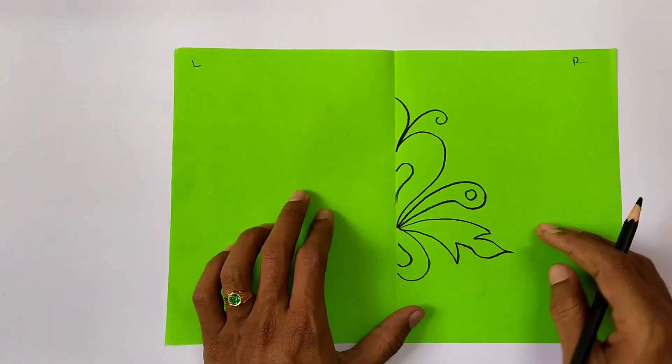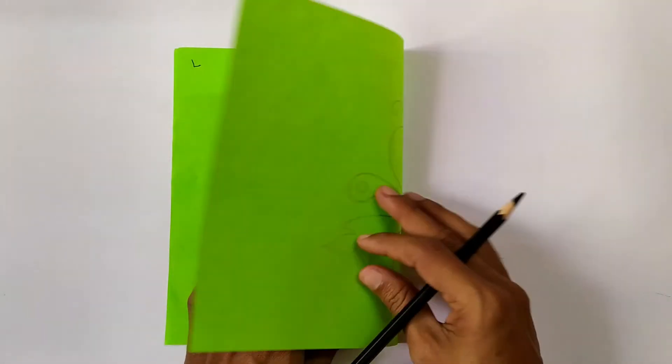Okay, and draw this. Now look at here, right side we draw it. Now we need to fold it half like this.